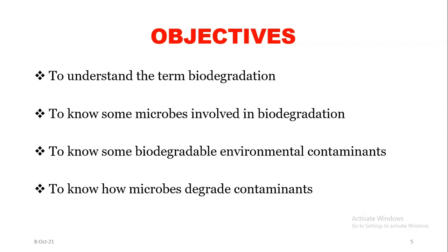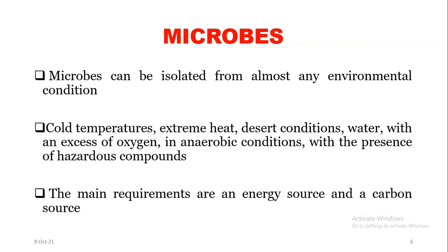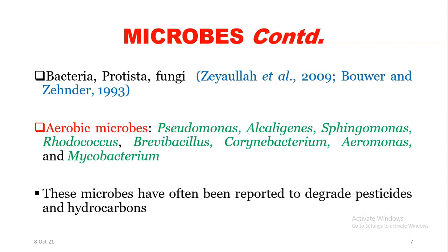What are microbes? Microbes can be isolated from almost any environmental condition — cold temperatures, extreme heat, water with excess oxygen, or anaerobic conditions with the presence of hazardous compounds. The main requirements are an energy source and a carbon source. Bacteria, protozoa, and fungi are all microorganisms that can degrade contaminants.